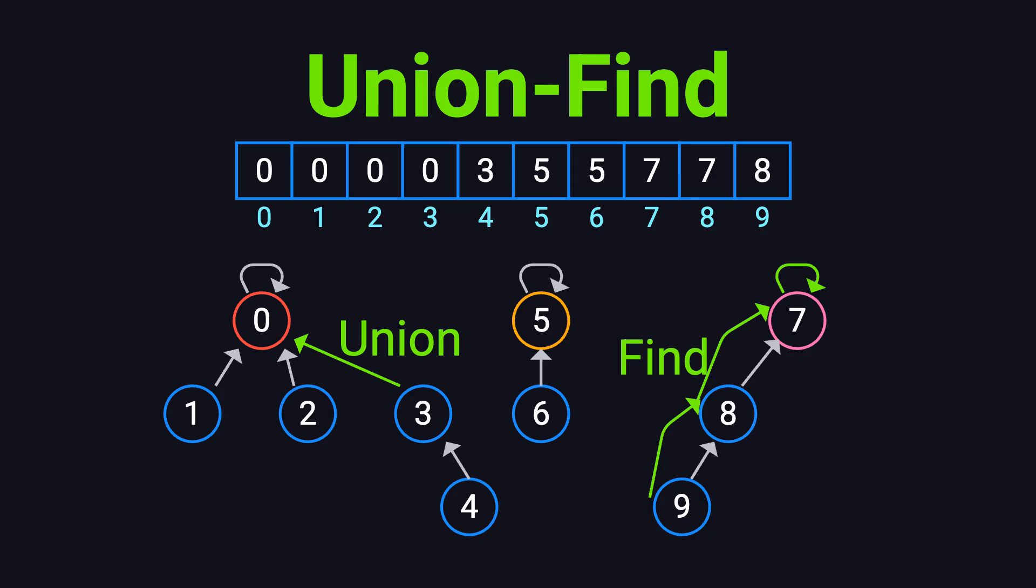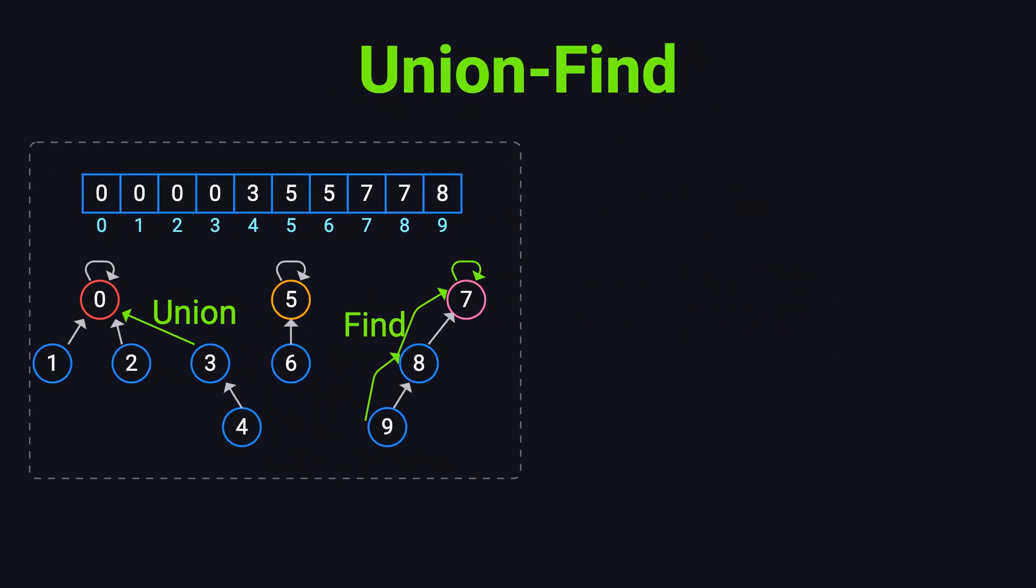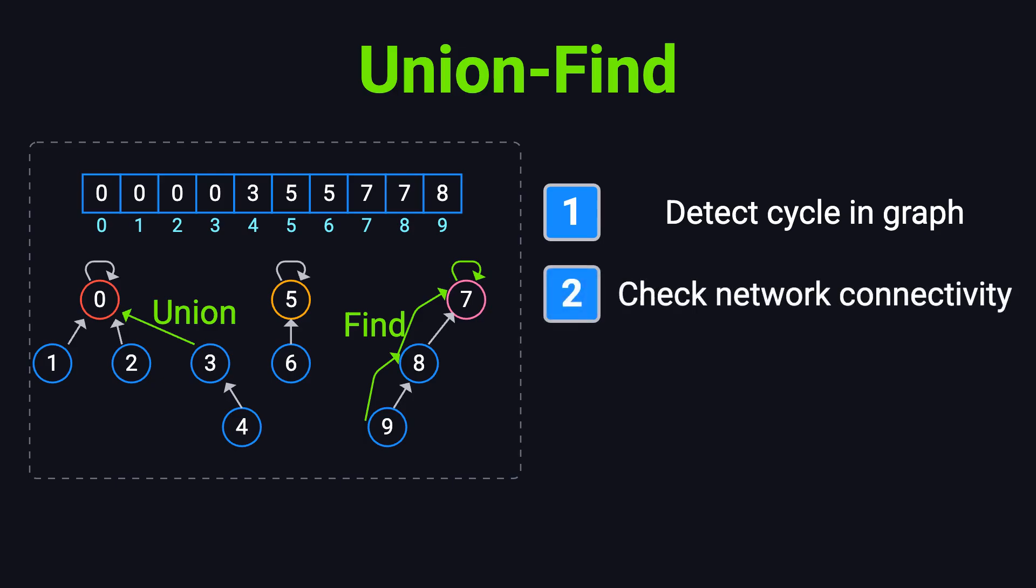The name might sound a little complicated, but this structure actually plays a critical role in many important algorithms. For example, it helps us determine if a graph has a cycle, figure out which nodes are connected in a network, and, in the next video, we'll see how it's used in Kruskal's algorithm to build a minimum spanning tree.